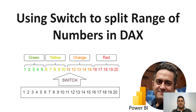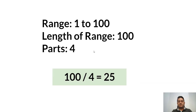To do this, for a sample range of 1 to 100, the length of this range is 100 and we want to divide it into four parts. First, we divide 100 by 4, which equals 25. Memorize this number and we continue in Power BI.